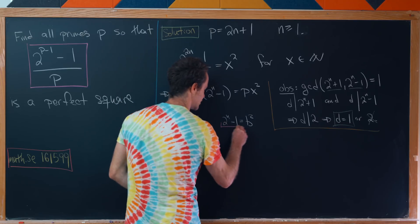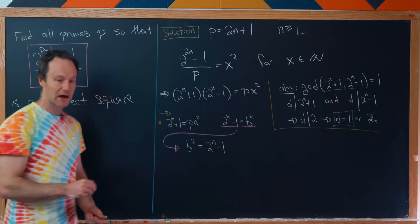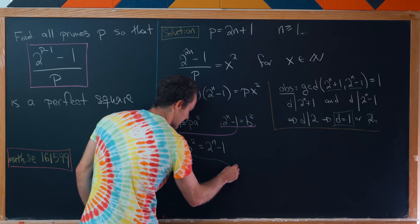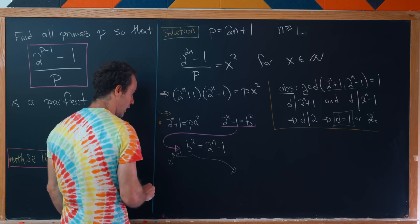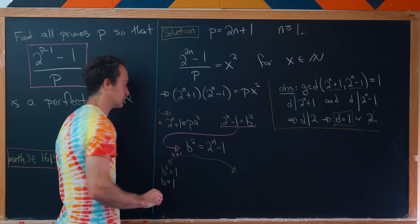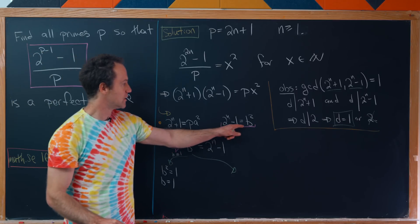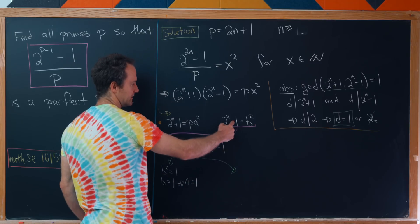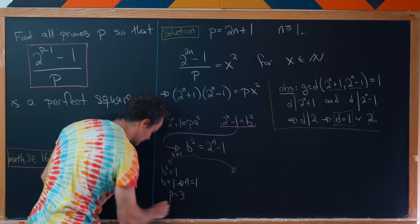Let's investigate this object and break into two sub cases. If n equals 1, then we have b^2 equals 1, which tells us b equals 1. If b equals 1, we'll see that n is also equal to 1 by this equation. But if n equals 1, p equals 3. So now we've got a potential solution.